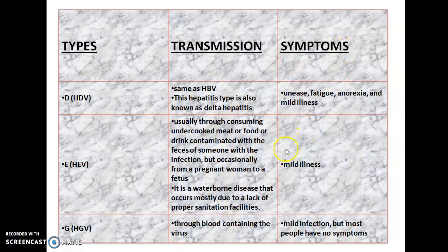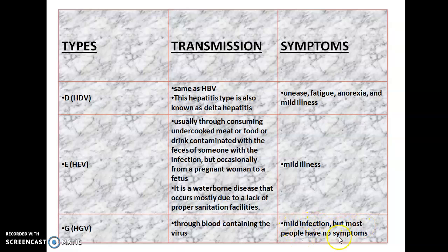Hepatitis E symptoms include mild illness only. Next is Hepatitis G — how it is transmitted: through blood containing the virus. The symptoms include mild infection, but most people have no symptoms.